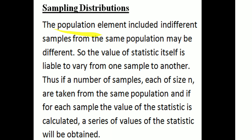Now, sampling distribution: the population elements included in different samples from the same population may be different. So the values of a statistic are liable to vary from one sample to another. Thus, if a number of samples, each of size n, are taken from the same population, and for each sample the value of the statistic is calculated, a series of values of the statistic will be obtained.